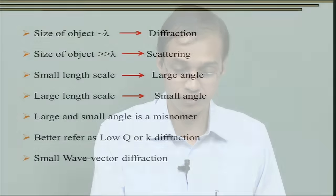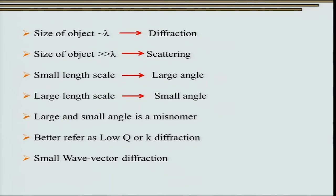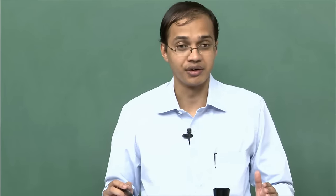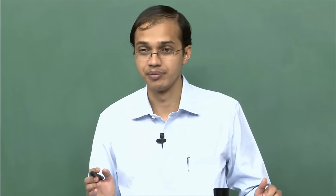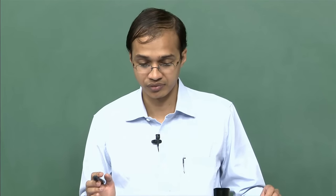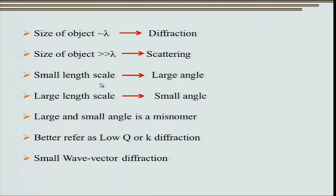Depending on the energy, we can get neutrons of very different wavelengths, and therefore we can see a wide variety of objects using neutron diffraction compared to X-ray diffraction. This is precisely because neutrons span a wide energy range, which in turn covers a wide wavelength regime. That said, small angle neutron scattering generally has the same size regime as small angle X-ray scattering — very small length scales give very large angles corresponding to normal diffraction.